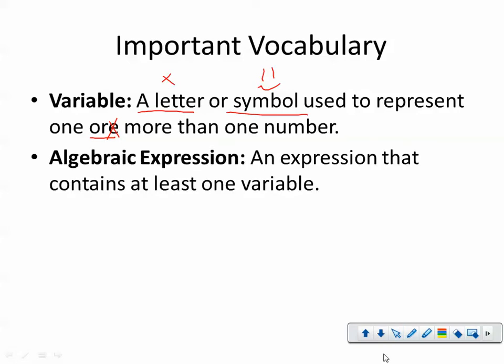Algebraic expression is an expression that contains at least one variable. So something like this, 3x plus 2, that's an expression. Or 4y, or x, that's also an algebraic expression. Or 3x squared plus y cubed, that is also an expression. It just needs to contain at least one variable. This, 3 plus 2, is not an algebraic expression because it does not contain at least one variable.